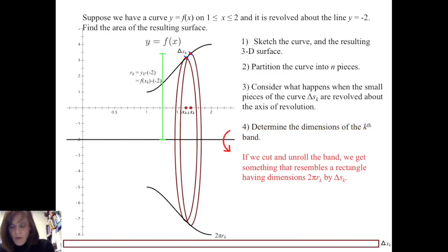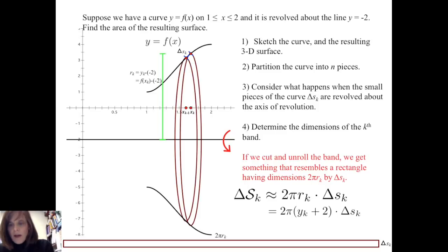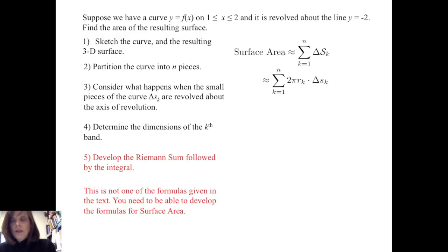When we cut and unroll the band, we get a rectangle with dimensions 2 pi r sub k by delta s sub k. So the area of the k-th band is approximately 2 pi r sub k times delta s sub k, which I write as 2 pi times f of x sub k plus 2 times delta s sub k. To find the area of the surface, I add up those belt areas, getting the sum from k equals 1 to n of 2 pi times f of x sub k plus 2 times delta s sub k.